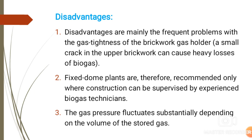The first disadvantage is frequent problems with gas tightness of the brick work gas holder. A small crack in the upper brick work can cause heavy losses of biogas. Unlike floating drum type plants where steel is used, here cement and bricks are used, and sometimes cracks form through which gas leaks, resulting in heavy biogas losses. Gas tightness is therefore a major problem.